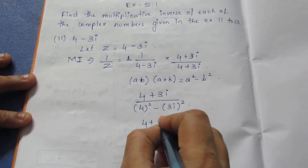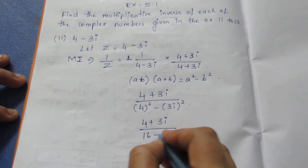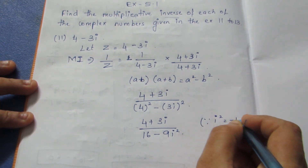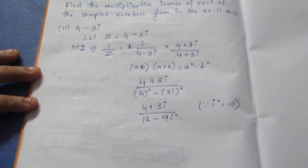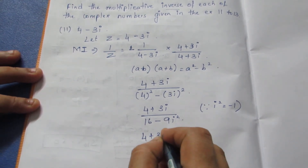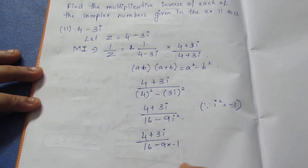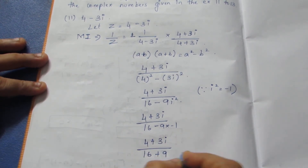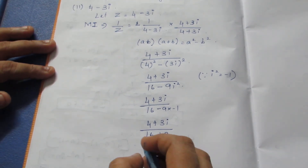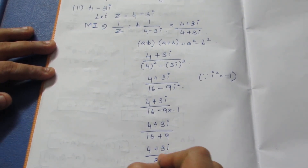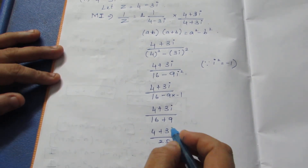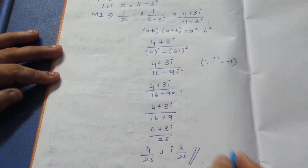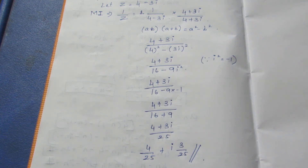If I multiply, I get 4 plus 3i by a squared minus b squared: 4 squared minus (3i) squared. The numerator becomes 4 plus 3i, and on the denominator it becomes 16 minus 9i squared. Now i squared is nothing but minus 1, because i is root of minus 1. Substituting the value: 4 plus 3i by 16 minus 9 times (minus 1) will become 16 plus 9, which is 25. So the answer is (4 plus 3i) by 25, or written in a plus ib form: 4/25 plus i(3/25). This is the final answer for problem 11.